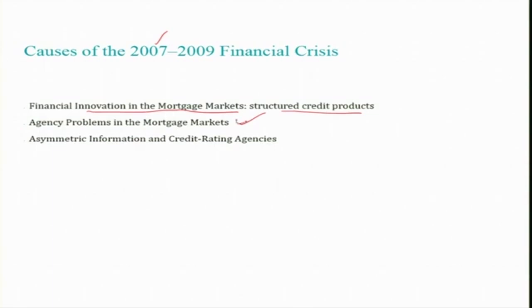Some kind of agency problems occurred here — brokers could not clearly check the default risk or the ability of the borrower to repay the mortgage. In addition, there were asymmetric information problems in the market. Credit rating agencies who rate the quality of debt securities in terms of probability of default were another contributor to asymmetric information in the financial markets.